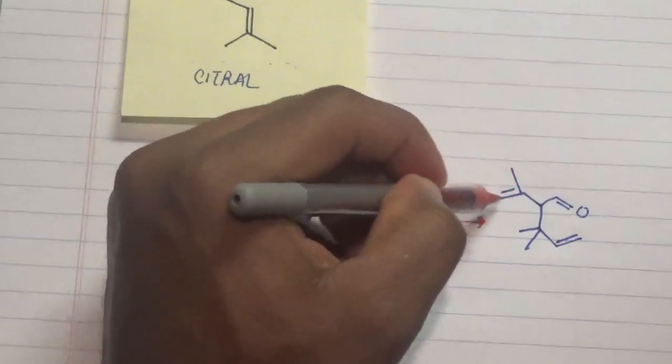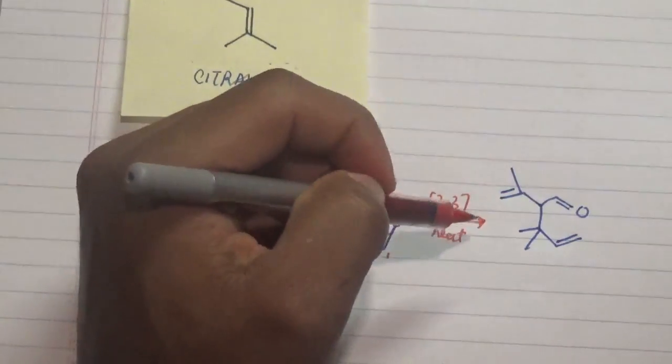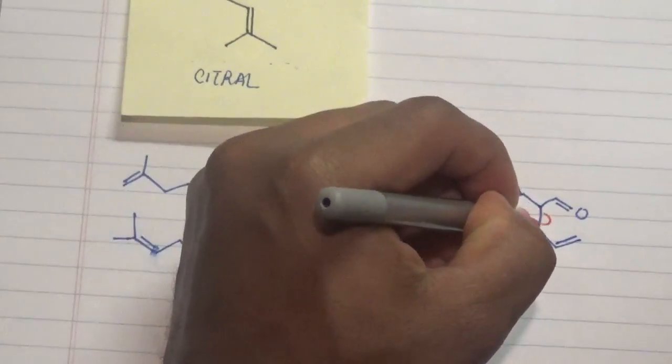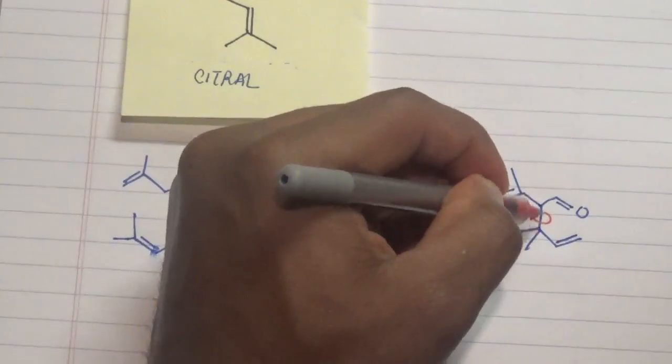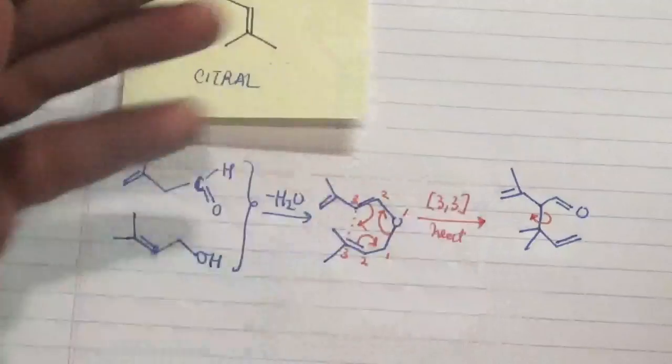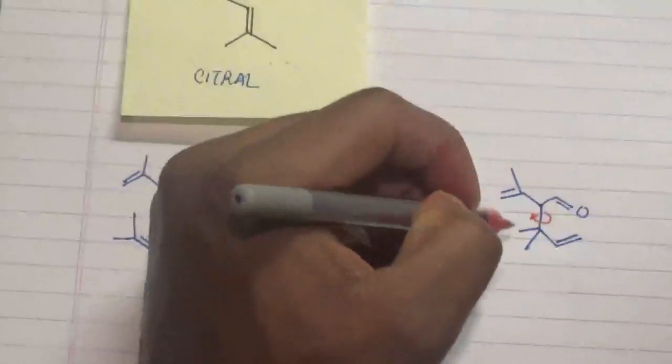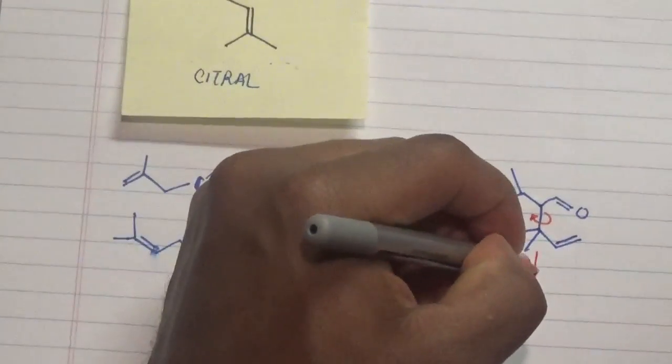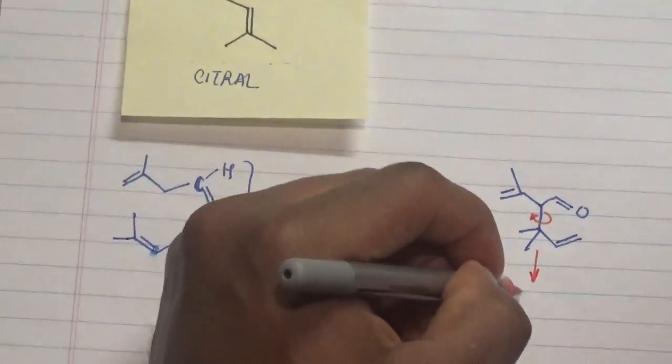Now what we realize is that there will be a rotation of our bond because this is an sp3 bond here and that can actually rotate flexibly. And what we have is that we'll actually go in this particular direction.